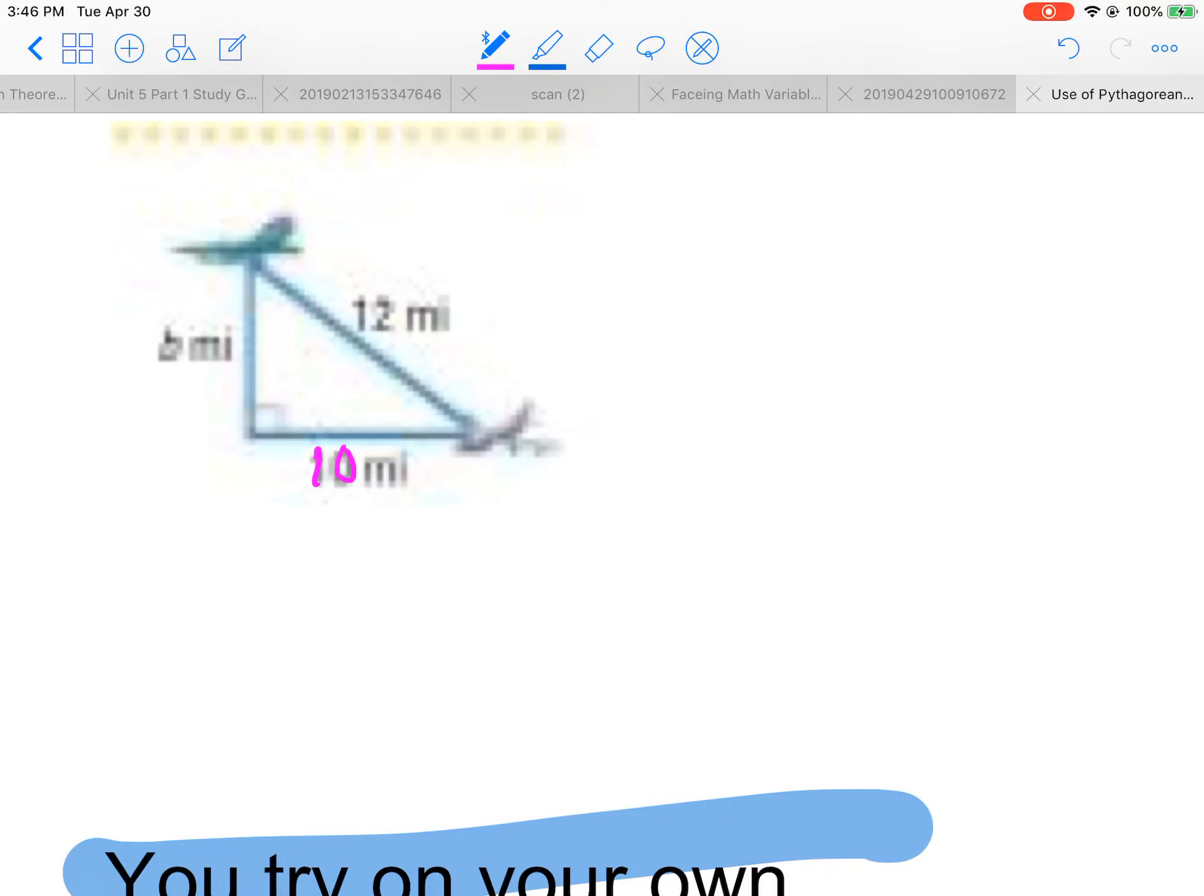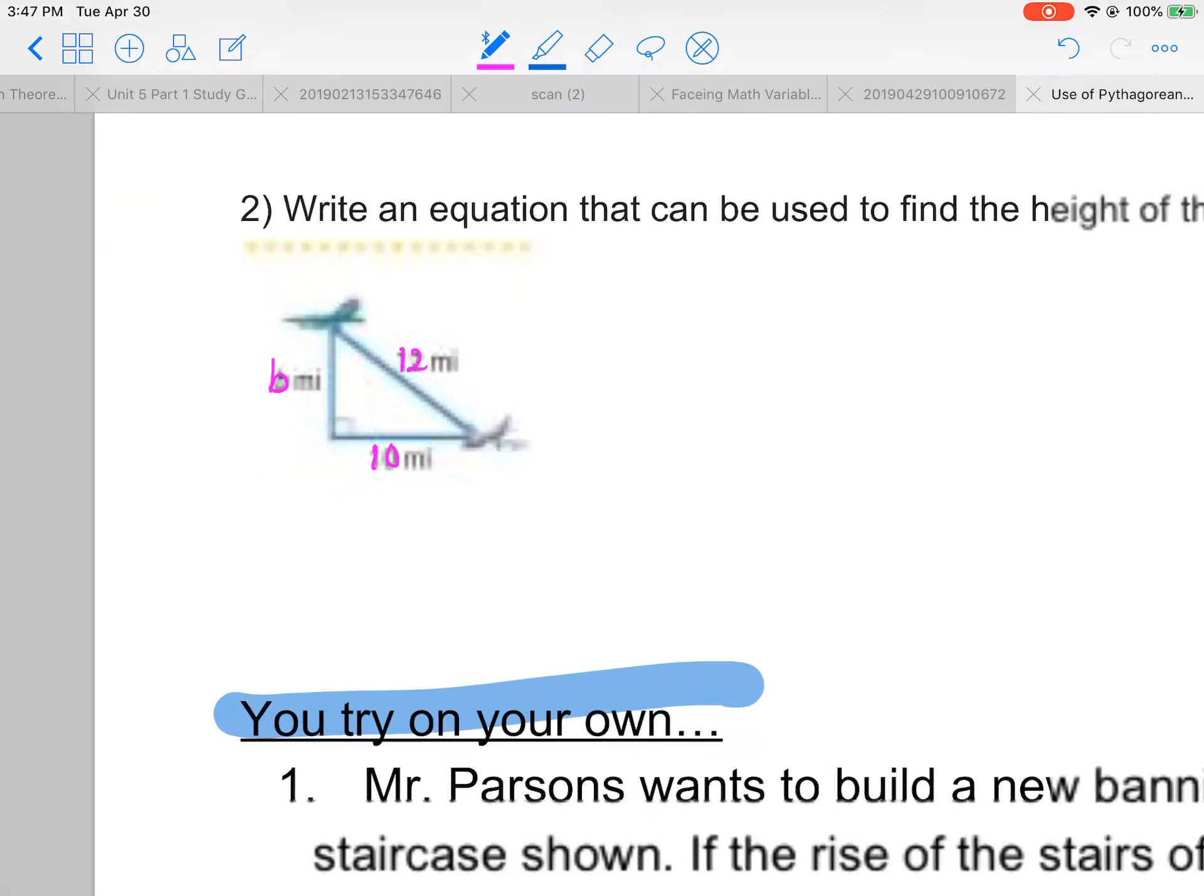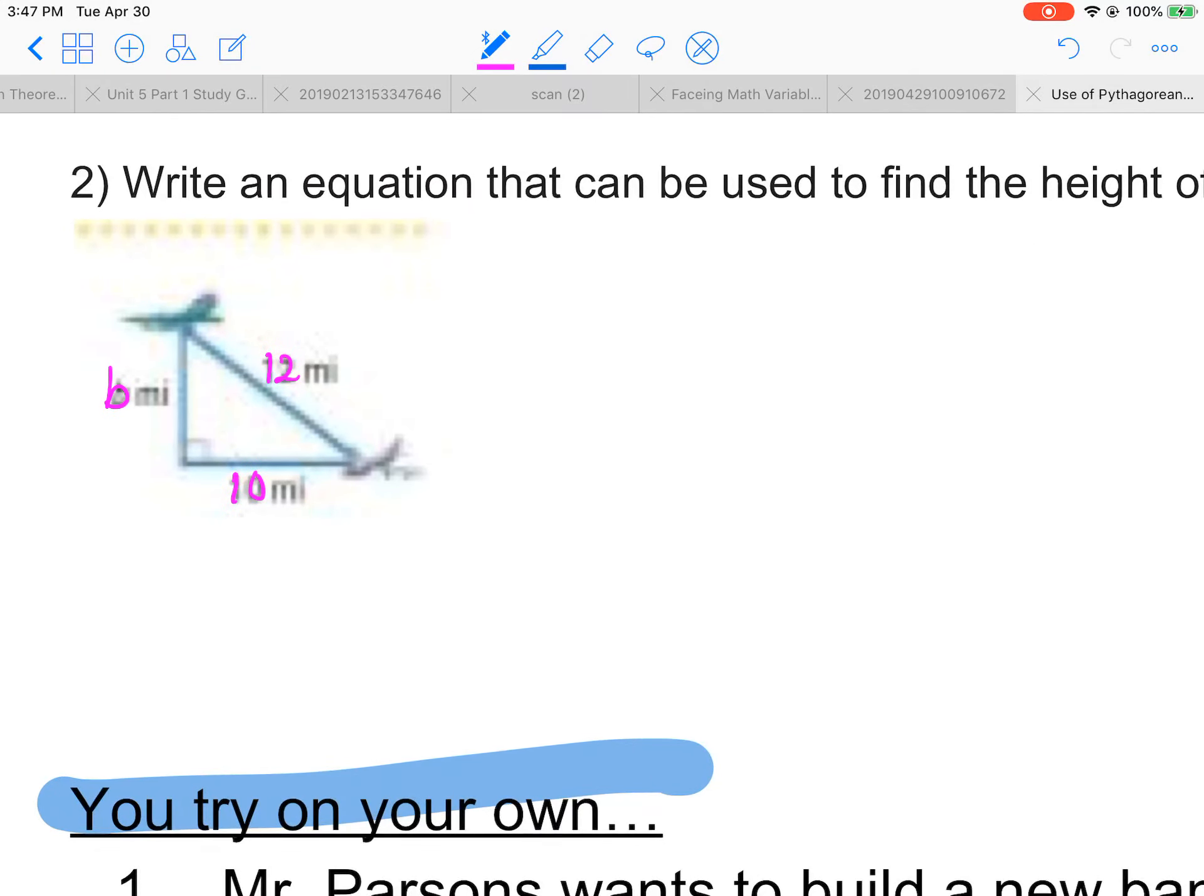So we have a 10, a 12, and a B. So we are missing one of the legs. So we'll write B squared plus 10 squared equals 12 squared. B squared plus 100 equals 144.